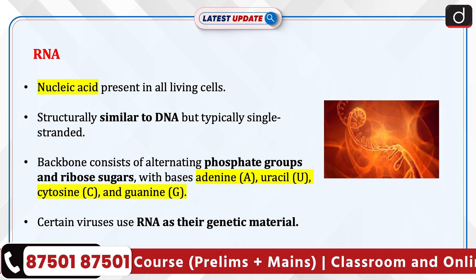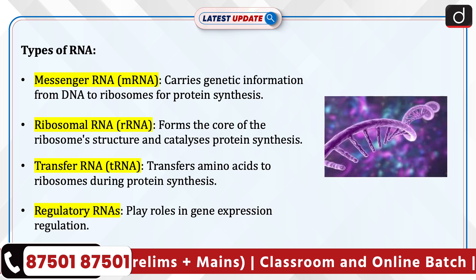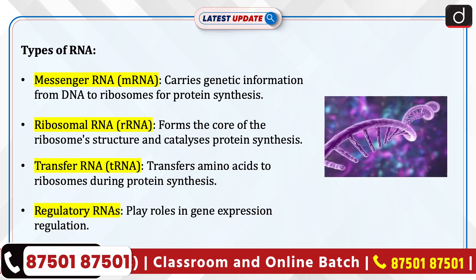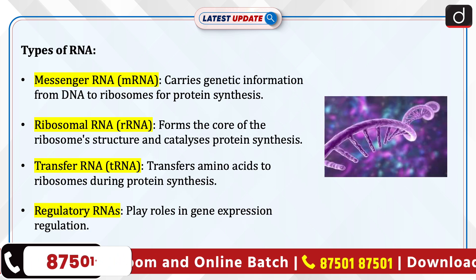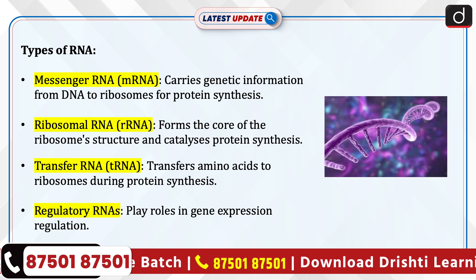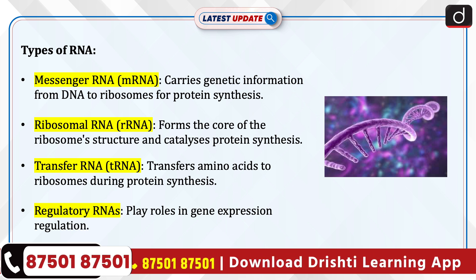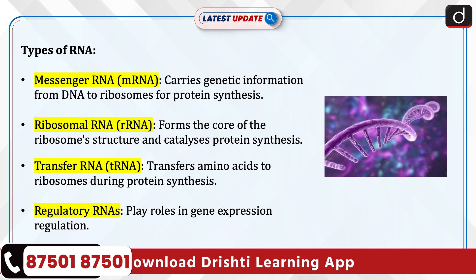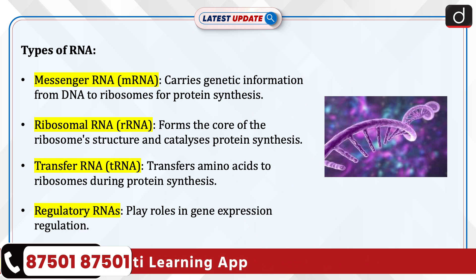Certain viruses use RNA as their genetic material. Types of RNA: messenger RNA (mRNA) carries genetic information from DNA to ribosomes for protein synthesis; ribosomal RNA (rRNA) forms the core of the ribosome structure and catalyzes protein synthesis; transfer RNA (tRNA) transfers amino acids to ribosomes during protein synthesis; and regulatory RNAs play roles in gene expression regulation.